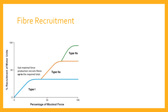If we've maxed out the type one fibres and still haven't produced the required force, we're next going to start recruiting our type two A motor units. The two A fibre is somewhat aerobic — it has some aerobic capacity and yet can produce greater force than type one fibres. If together the type ones and two A's can do the job, fantastic. If not, we'll get the type two X fibres involved.